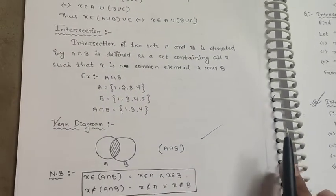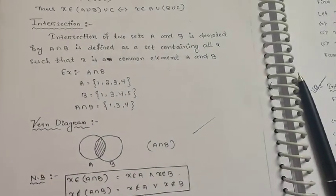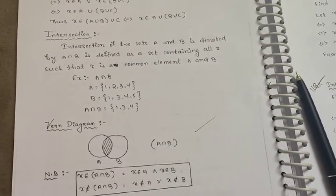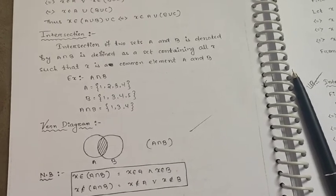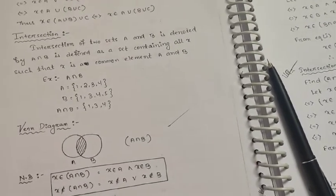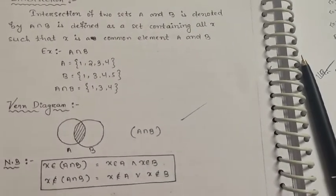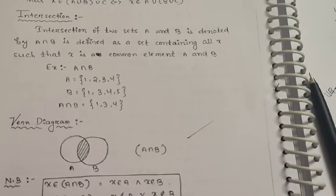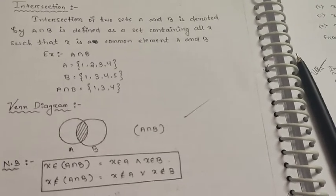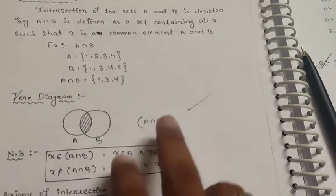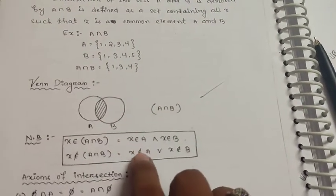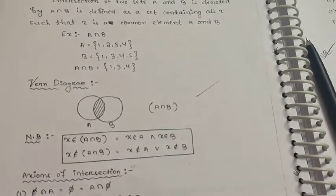Next, intersection. The intersection of two sets A and B, denoted A intersection B, is defined as the set containing all x such that x is a common element of both A and B. For example, if A equals {1, 2, 3, 4} and B equals {1, 2, 3, 4, 5}, then A intersection B equals {1, 3, 4}.